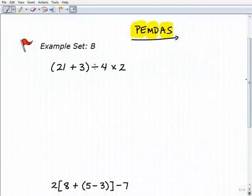So with that in mind, let's go ahead and apply this procedure to these problems here. And so I look at my first problem. I'm looking for parentheses or grouping symbols. And of course, I have them right here. So I have to do what's inside of the parentheses first. So I have 21 plus 3. Of course, that's going to be 24 divided by 4 times 2.